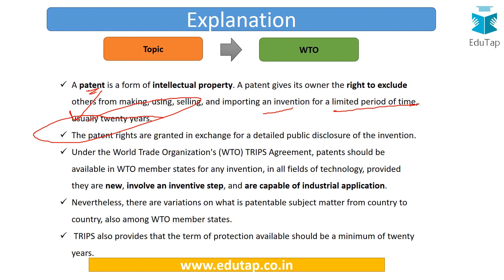Under WTO rules, a patent is granted if the invention is new, involves an inventive step, and is also capable of industrial application — that is, useful. There are certain variations depending upon the country. The TRIPS agreement provides for a term of protection that is a minimum of 20 years. A patent is a set of exclusive rights granted by a government to an inventor in exchange for detailed public disclosure of the invention.